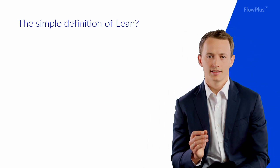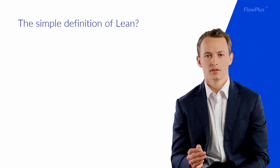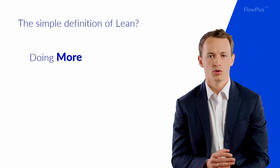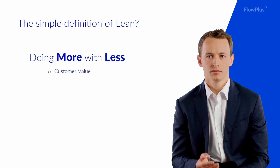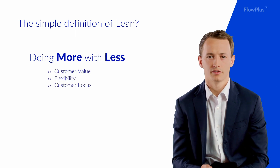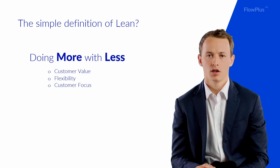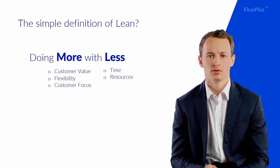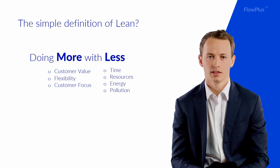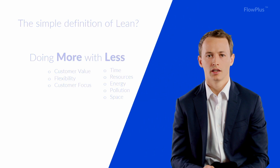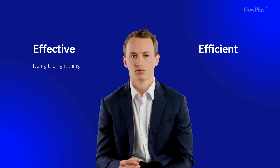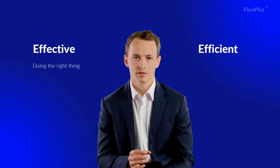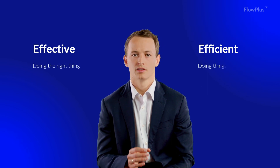In its most simplistic terms, lean is about doing more with less — more customer value, flexibility and customer focus, with less time, resource and energy. Lean is about working in a more effective and more efficient way. Effective means doing the right things, while efficient means doing things right.